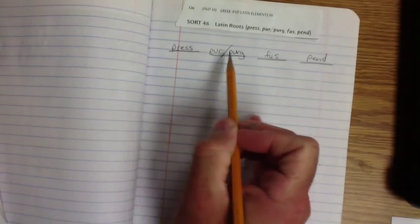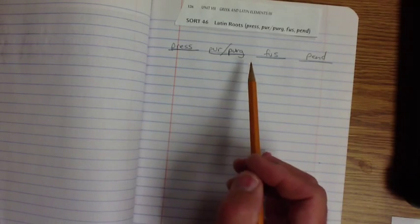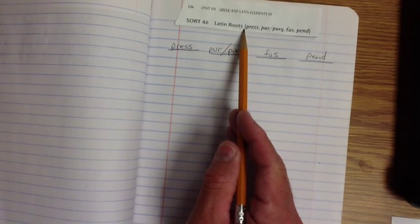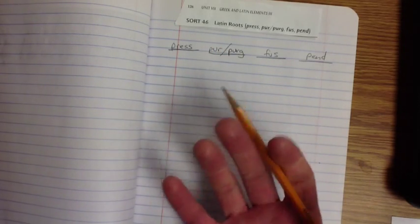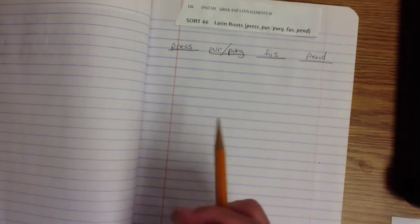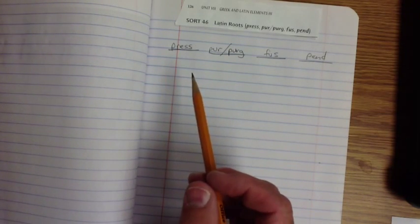All right, so here we go. Now, you'll notice that these, and you've heard words that use press, purge, purr, fuse, or pend. I'm almost positive you've heard some of these because these root words, these Latin root words are known. There's a lot of these that you have heard and you have known in your reading, just in your speaking, those kind of things. But we're going to find out what they actually mean today.